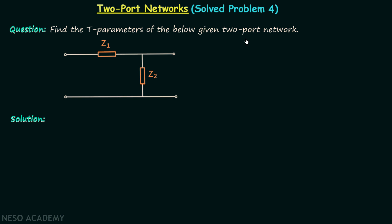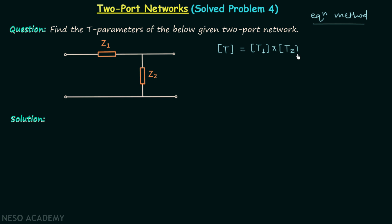Find the T parameters of the given 2-port network. We can find the T parameters by following the equation method, but I have taken this question to explain the process of breaking down a larger 2-port network into smaller 2-port networks connected in cascade. We will first try to break this network into small 2-port networks connected in cascade, and we can break it like this.